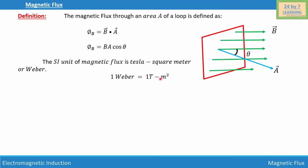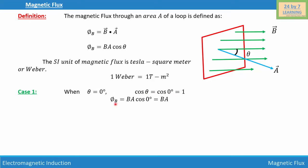Now let's consider the cases based on the value of the cosine angle. Case one: when theta is equal to zero degrees, cosine theta equals cosine zero, which equals one. Then magnetic flux phi B is equal to B A cosine zero, which is basically equal to B A.